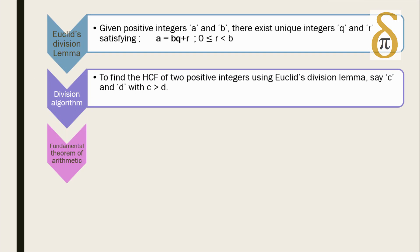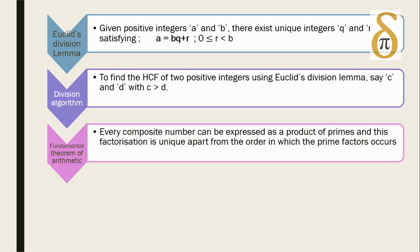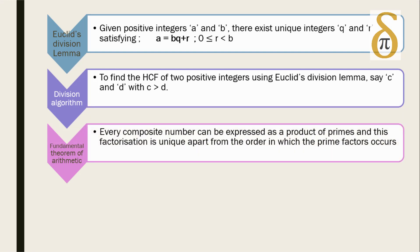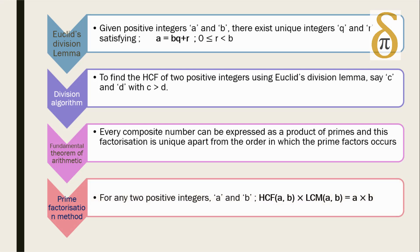The next topic you have to remember in real numbers is fundamental theorem of arithmetic. It states that every composite number can be expressed as a product of primes and these factors are unique apart from the order in which the prime factors occur. Using prime factorization we are finding the HCF and LCM, and this relation states that HCF times LCM of any two numbers equals the product of two numbers.